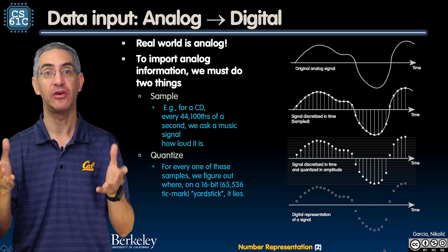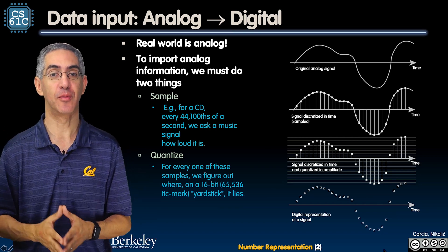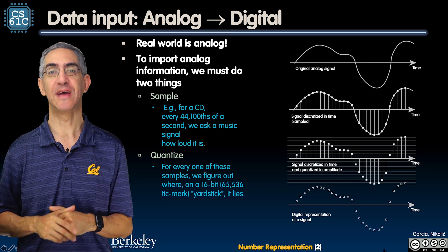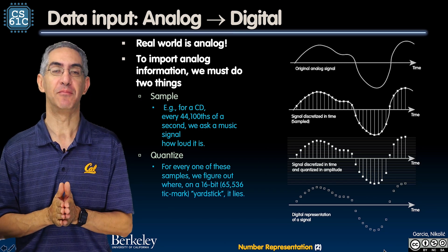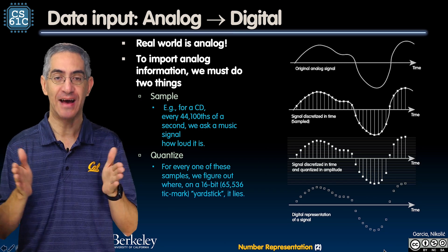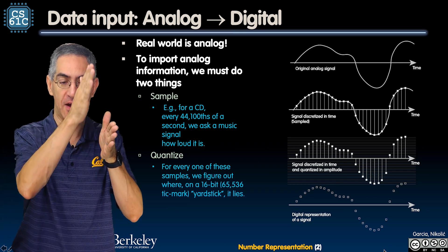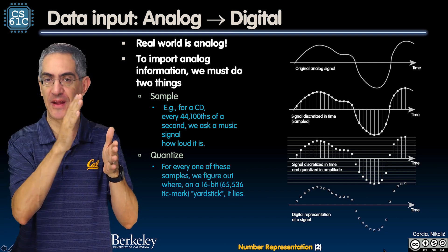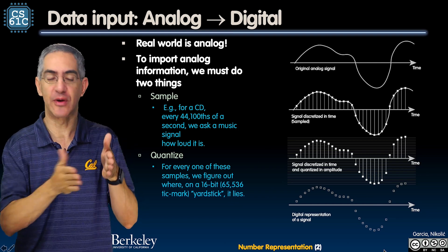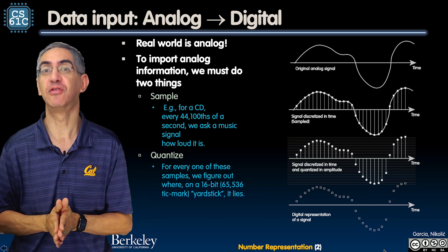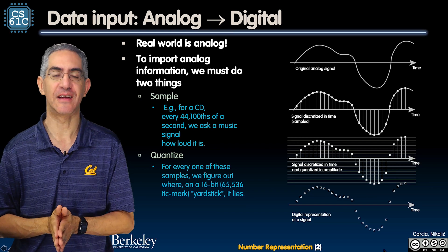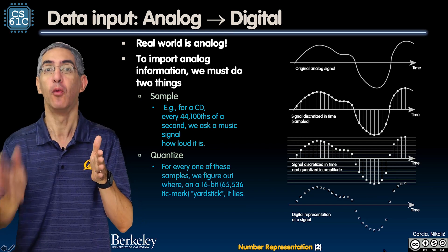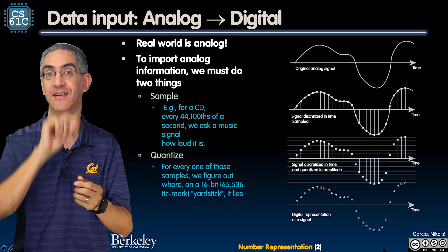In order to convert analog data to digital data we must do two things. Number one, we have to sample — that means we ask at every time step what's your value, and that usually is at a regular interval. For example, for music on CDs, that's 44,100 times a second we're asking it what its height is.